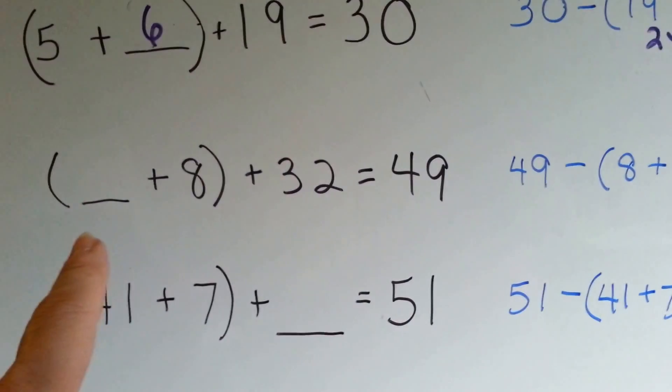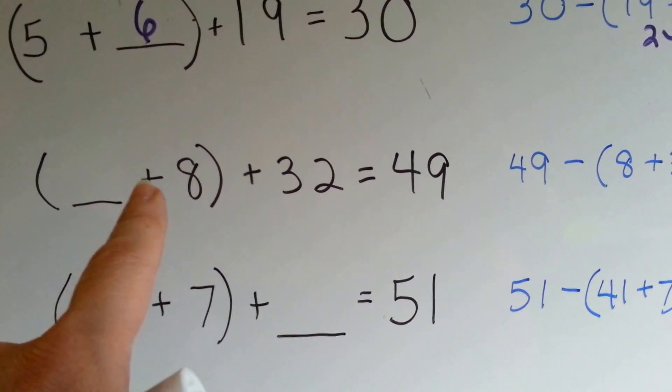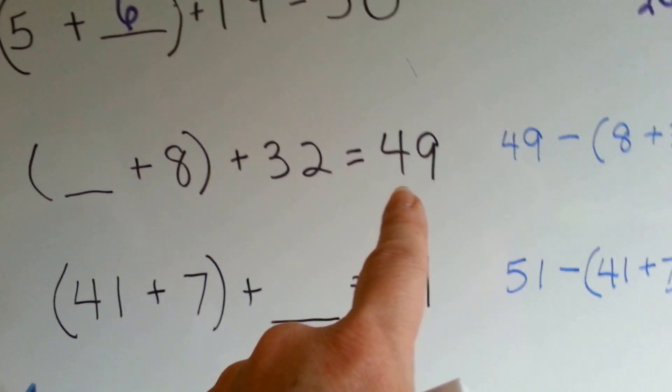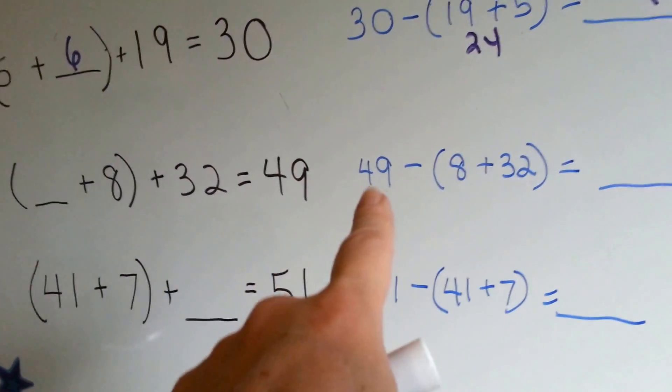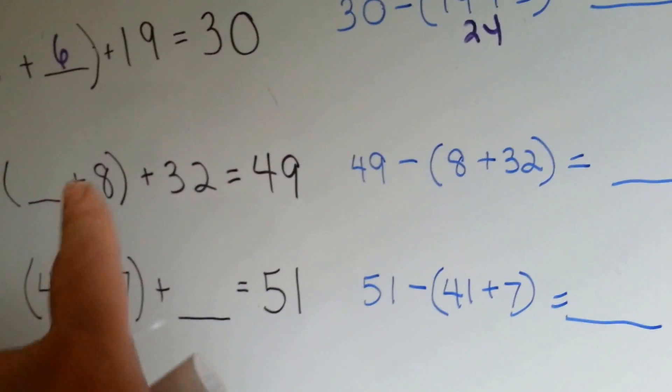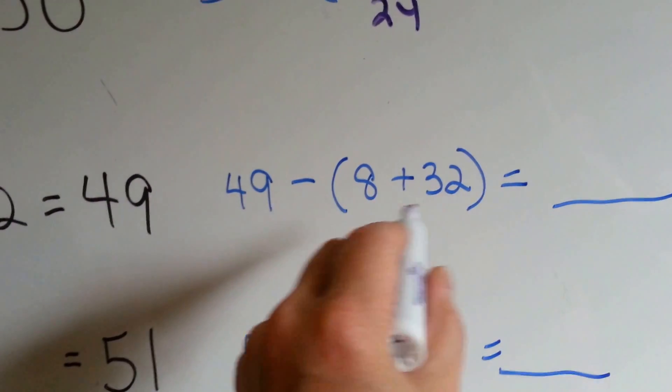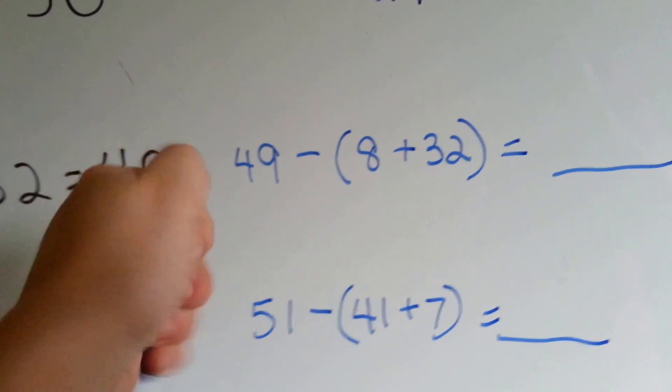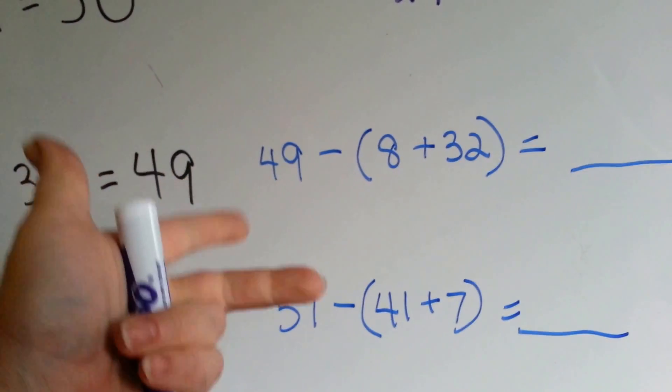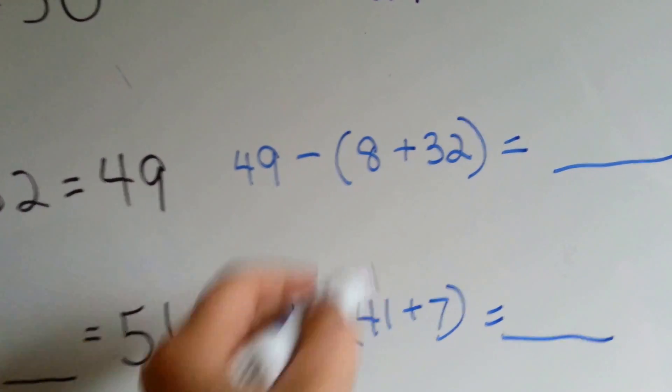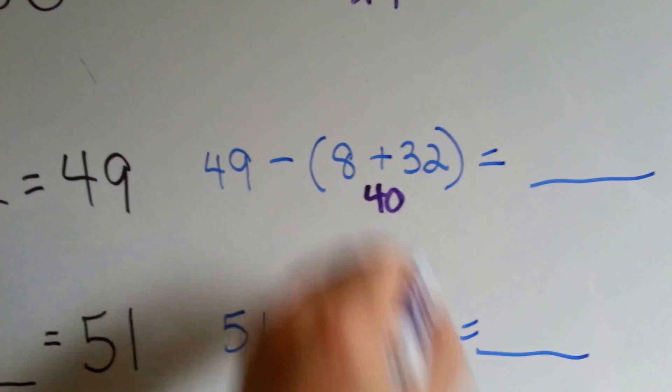What about this one? Blank plus 8 plus 32 equals 49. So we take 49 and subtract the 8 plus 32. What is 8 plus 32? 8 plus 32 is 40.